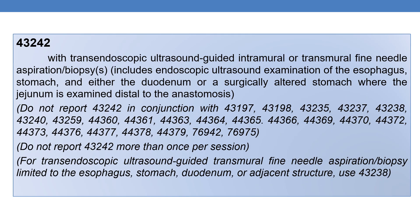The next CPT is 43242. It deals with esophagogastroduodenoscopy, flexible, transoral, with transendoscopic ultrasound-guided intramural or transmural fine needle aspiration or biopsy. It includes endoscopic ultrasound examination of the esophagus, stomach, and either the duodenum or a surgically altered stomach where the jejunum is examined distal to the anastomosis. Do not report 43242 more than once per session.